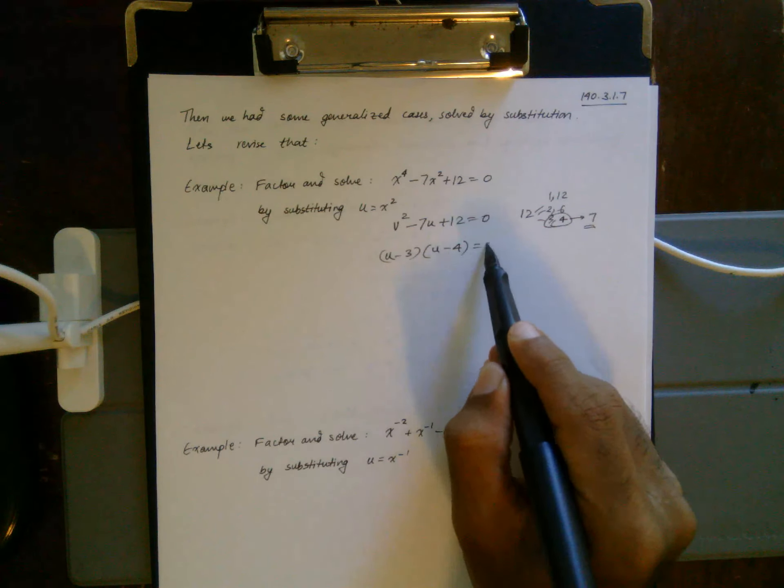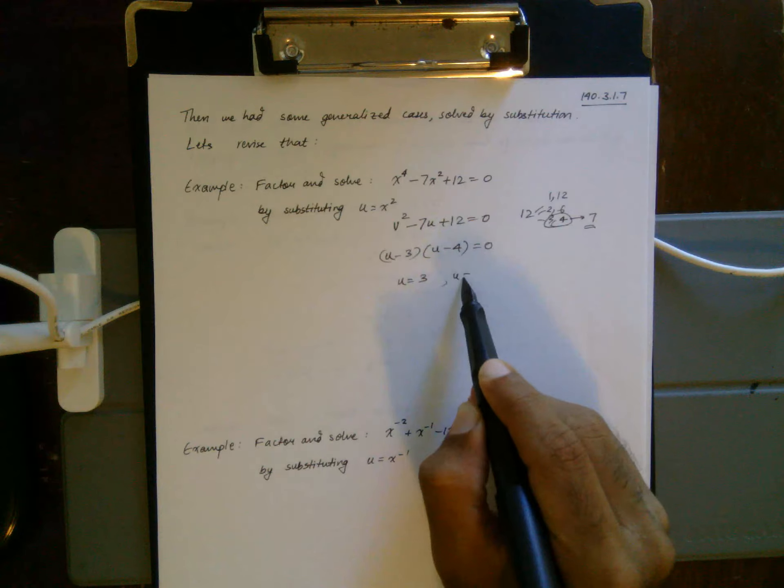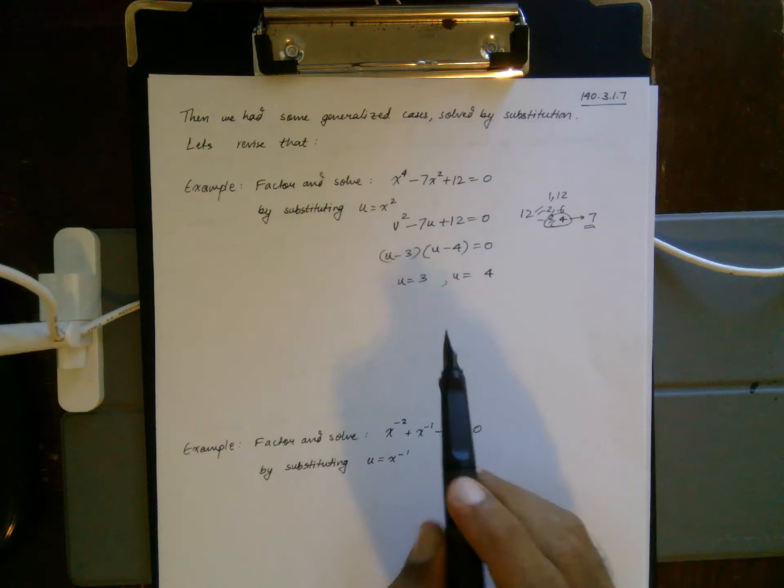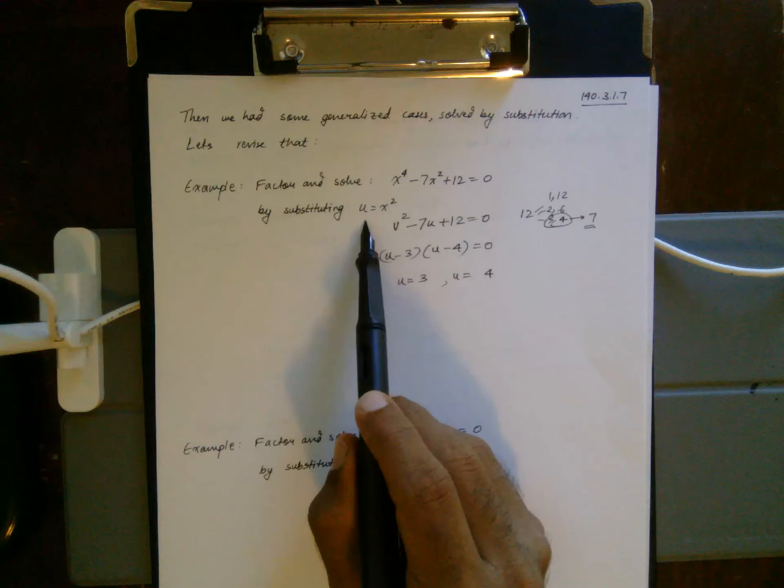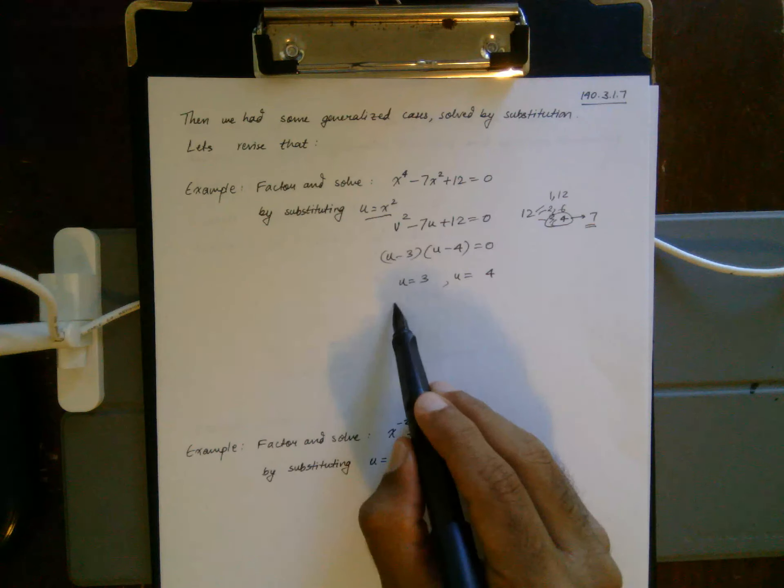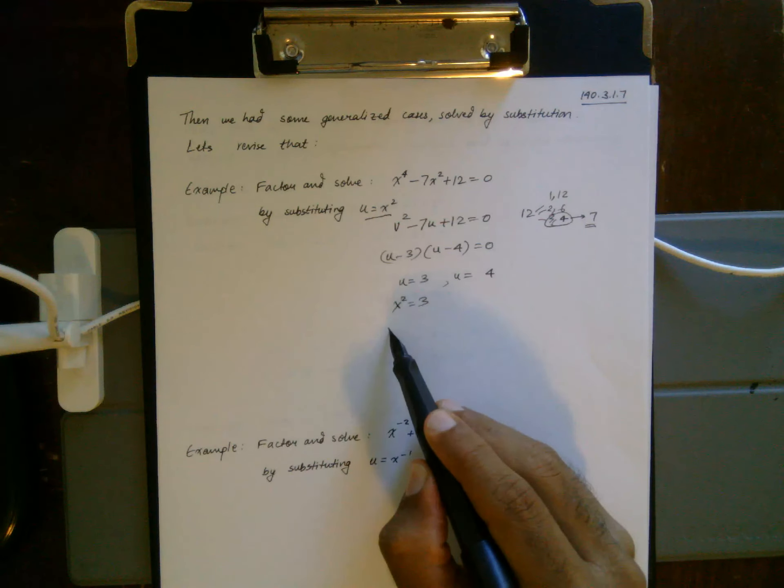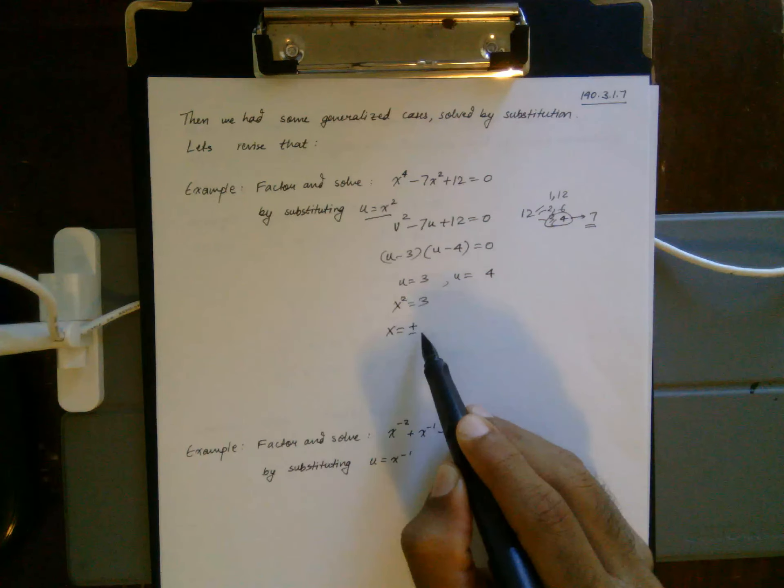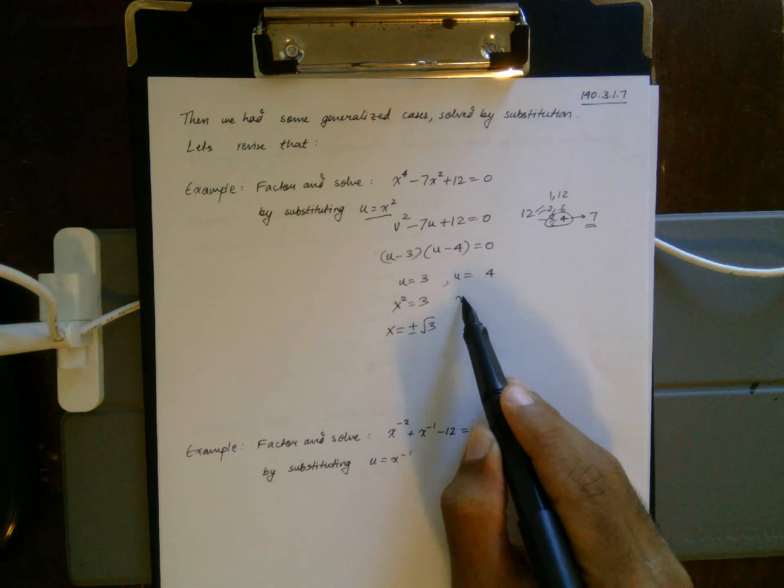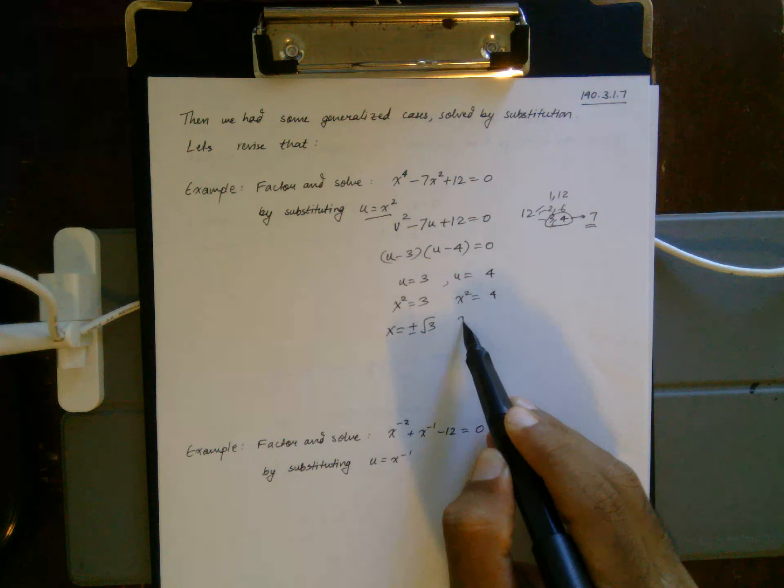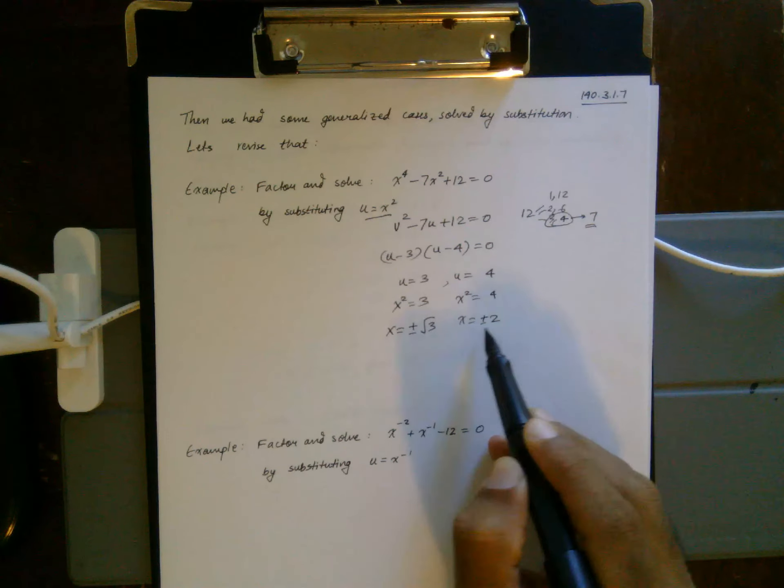So you get u is 3 and u is 4, but it's not yet complete because what is u? u is x². So this actually gives you x² is 3, giving you two answers: plus or minus root 3, and this gives you x² is 4, giving you two more answers: plus or minus 2.